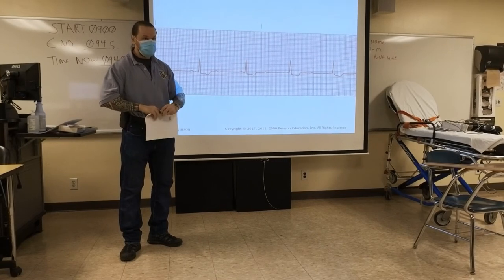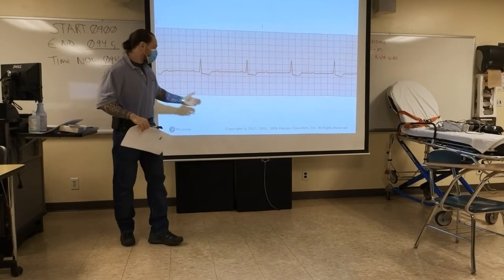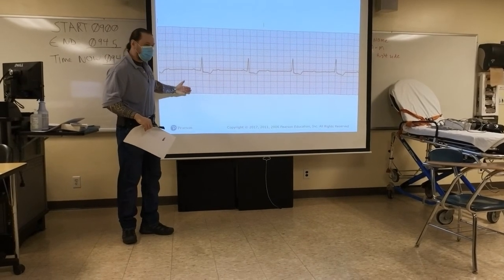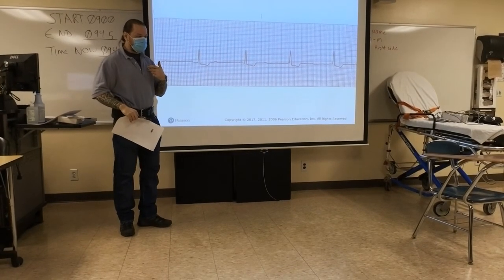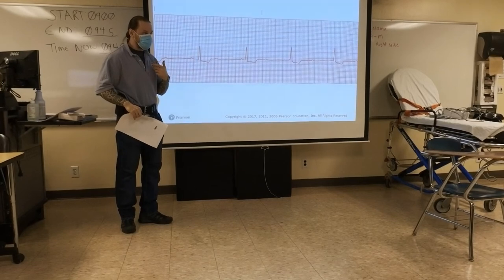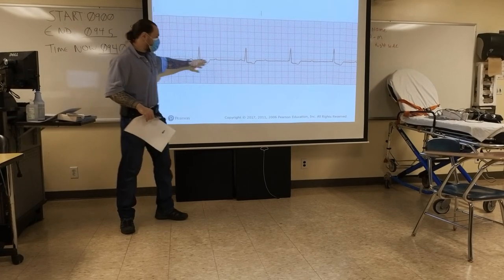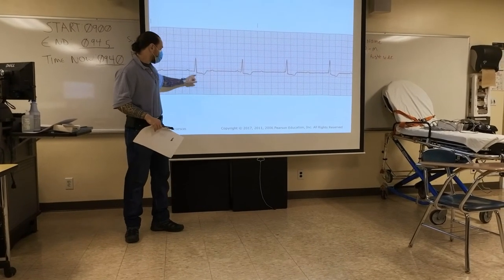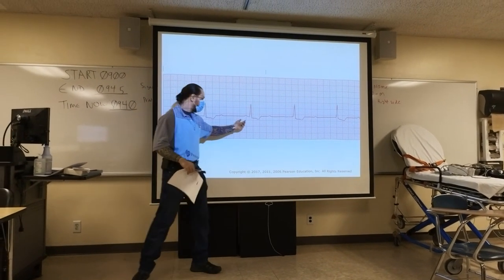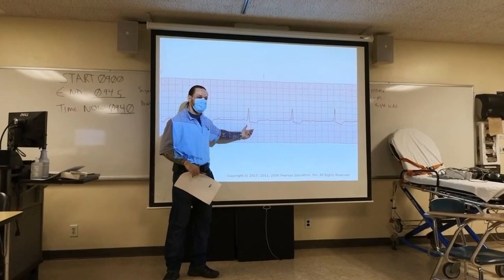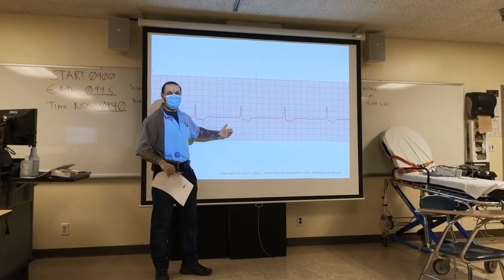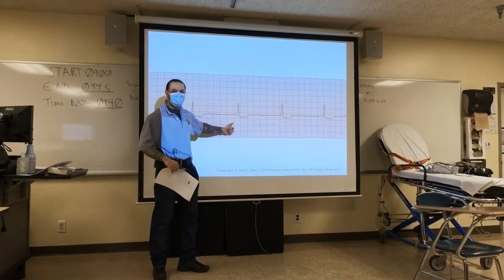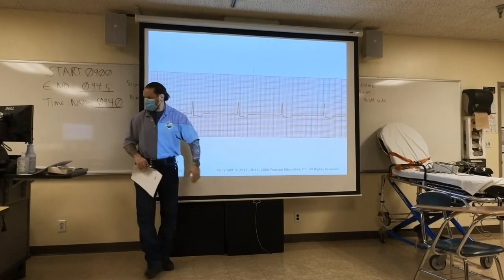Third degree heart block. If you apply the systematic approach, you will get to the correct interpretation. Usually in third degree, we have a regular rhythm, and there's some abnormality where the SA node is not communicating through the AV node to the ventricle. So atria beat at their own rate, ventricles at their own rate — they are not talking to each other. Why is the QRS narrow and not wide? Maybe the impulse is coming somewhere from the node, not all the way lower in the ventricles — a normal junctional escape rhythm. Junctional rate is 40 to 60, which fits.